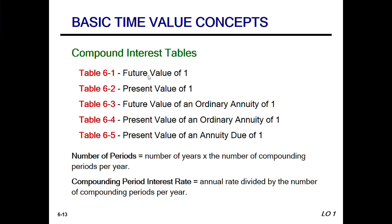These are the unknowns. We don't know what it's going to be in the future, so we want to find out. We don't know what it's currently worth, so we want to find out. That's the difference between future and present value.